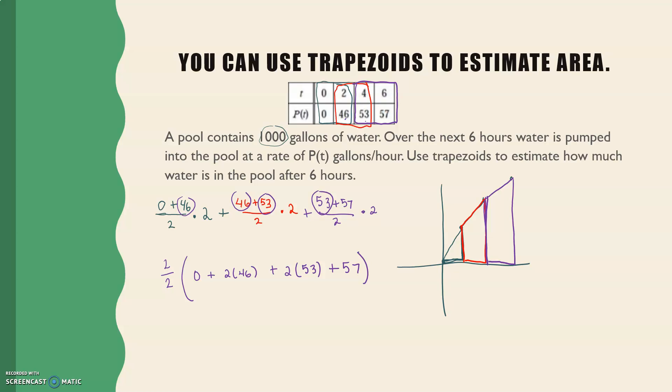But don't be freaked out that you're using the 46 in two different trapezoids and the 53 in two different trapezoids. It's because it's basically a dot-to-dot and we're using that more than once. The other thing I want to point out is that the question asked how much water is in the pool after six hours. So I'm going to have to do this math. This would be 92, and this would be 106 plus 57. 92 plus 106 would be 198 plus 57 would be 255. That's how much water was pumped into the pool, but it already had a thousand gallons in it. So the pool would have a thousand gallons plus 255 gallons. So be careful of those kinds of problems where they're giving you a starting amount because you need to take that into account as well.